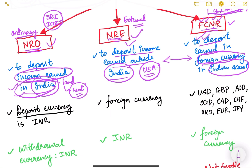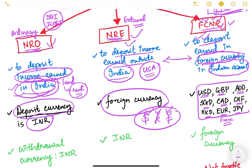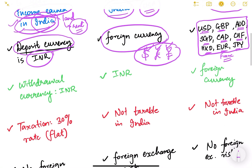When depositing money in an NRO account, the deposit currency is Indian rupees because that income is earned in India. For NRE account, you deposit foreign currency — dollars, pounds, or yen — since the income is earned outside India. For FCNR account, deposits are also made in foreign currencies, but only nine specific currencies are allowed by the Reserve Bank of India: US dollar, Great Britain pound, Australian dollar, Singapore dollar, Canadian dollar, Swiss franc (CHF), Hong Kong dollar, Euro, and Japanese yen.